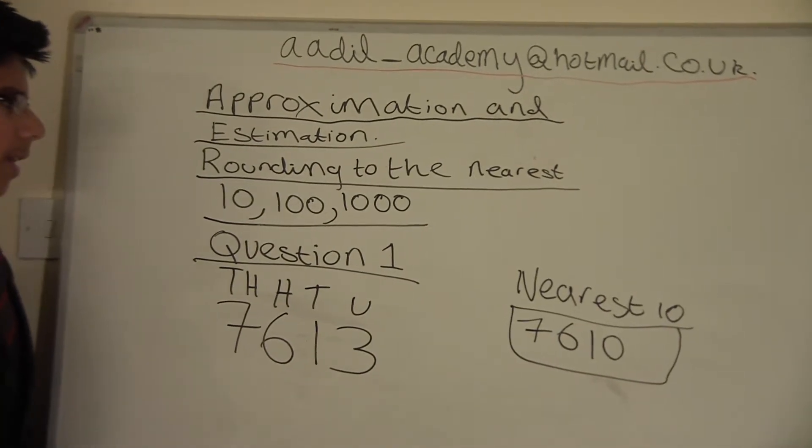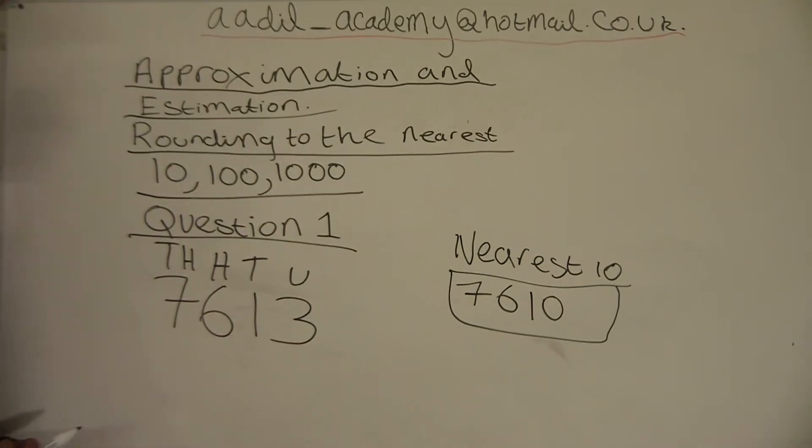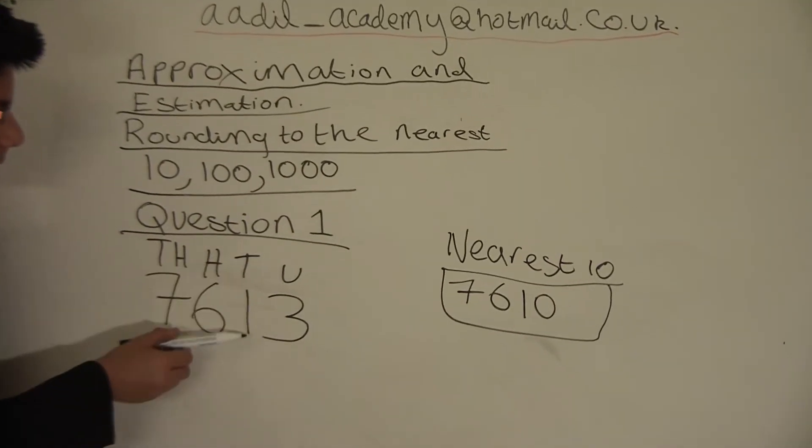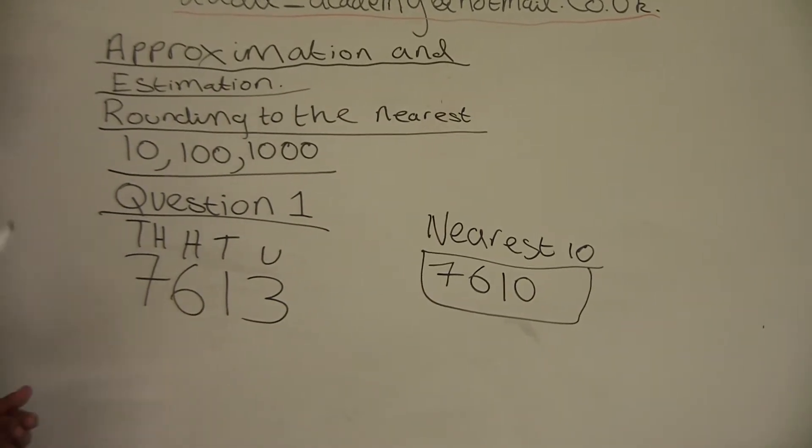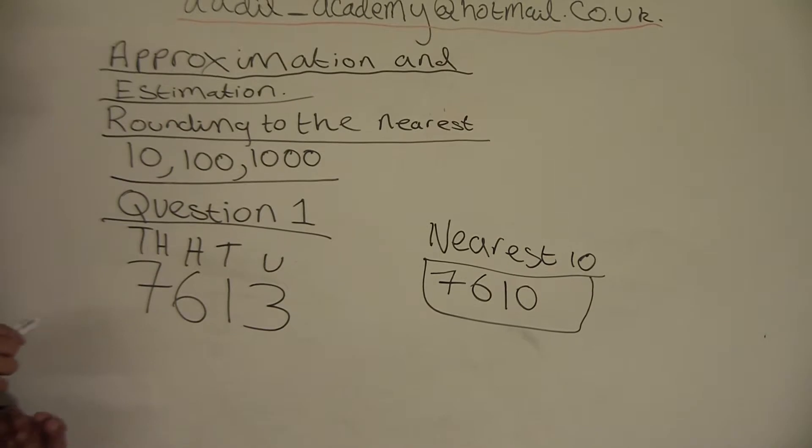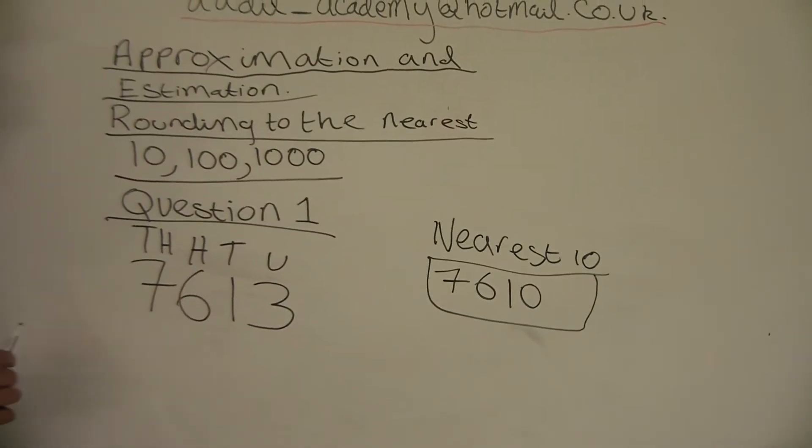Now we will have to round it to the nearest hundred. To do that, we will have to look at the tens column. It is the same rule: if it is above five, we round up; below five, we round down. Here is one, so we will round down.